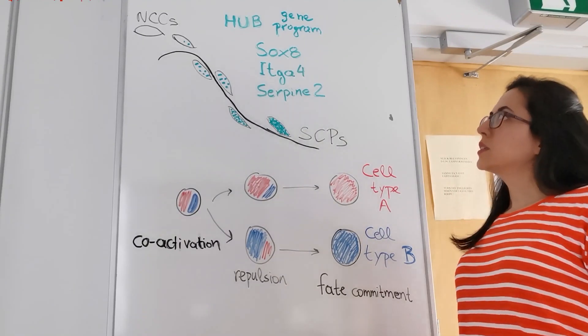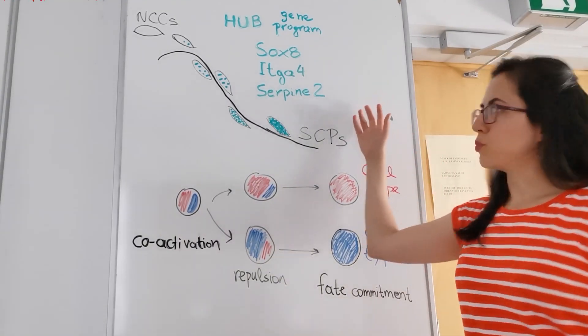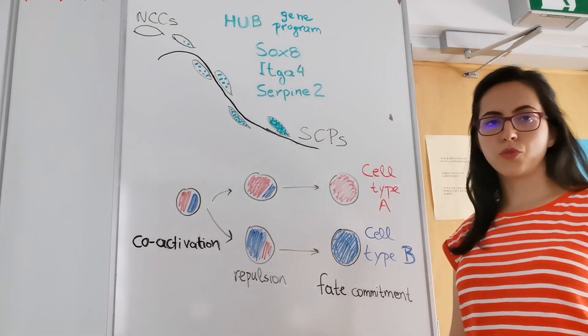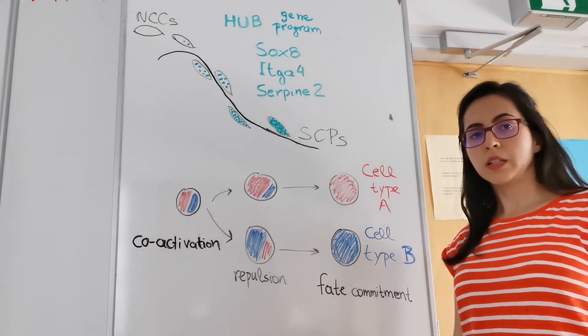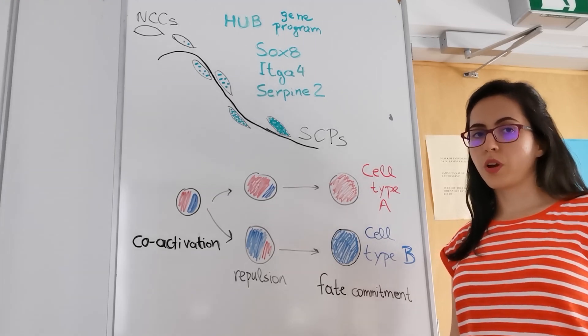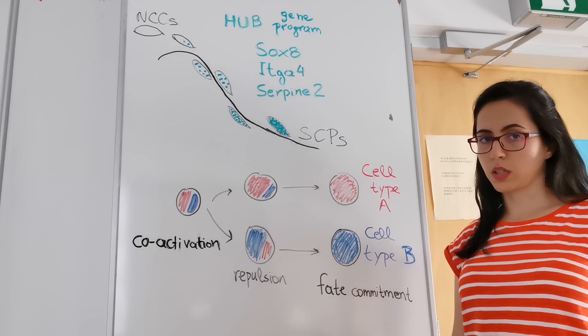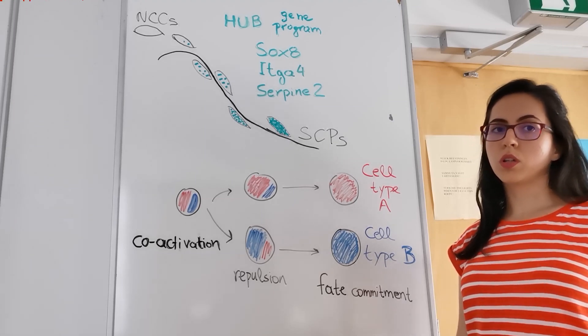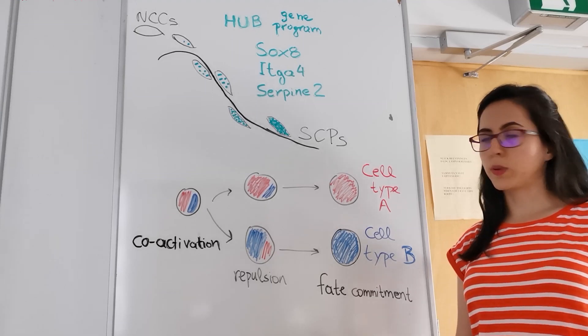The hub is characterized by a specific gene expression program. Among those genes, we identified SOX8, integrin-alpha-4, and Serpin-2. We validated those genes experimentally by in situ hybridization, and we further identified SOX8 as a key transcriptional factor in fate determination on nerves using a knockdown experiment in the developing chicken embryo.